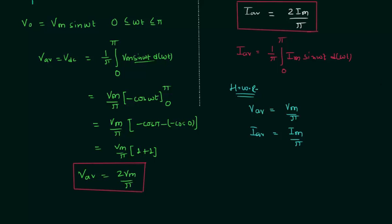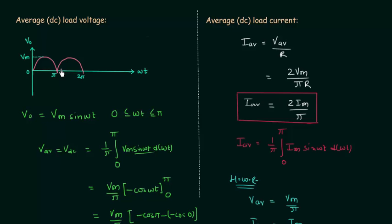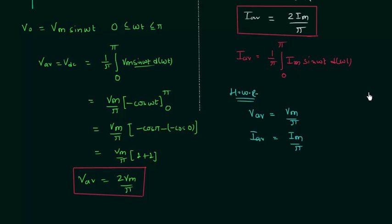This is because in a full wave rectifier we have an identical waveform in the negative half cycle as well. In a half wave rectifier, the output voltage was 0 during the negative half cycle, but here we have the same waveform as the positive half cycle. So the average is doubled, and this is definitely one of the main advantages of using a full wave rectifier. In the next presentation we will discuss RMS load voltage and RMS load current.